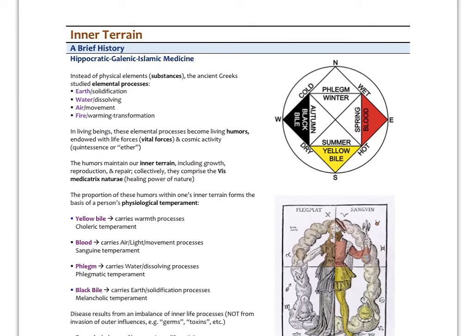I want to develop this concept of inner terrain, because it will be important as we go forward in understanding different hormones. Looking back in history at how our inner physiologic environment was conceived in more traditional medicines — specifically Hippocratic Galenic Islamic medicine, the ancient Greek medicine further developed in Roman times and by Islamic physicians, and still practiced today as Unani medicine in Persia, Iran, and India — the emphasis was not so much on substances like hormones or chemicals, but more on elemental processes.